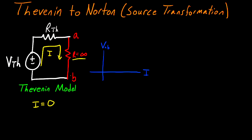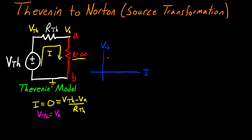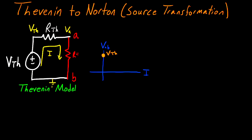Because this infinite resistance is going to block all my current. I'm going to label this my ground node, call this node V_Thevenin, and call this node V_A. Now let's write the Ohm's Law equation for R_Thevenin: zero equals V_Thevenin minus V_A divided by R_Thevenin. The only way this equals zero is if V_Thevenin equals V_A. With this, we have the first point on our graph — when I goes to zero, the voltage across A and B goes to a value of V_Thevenin.